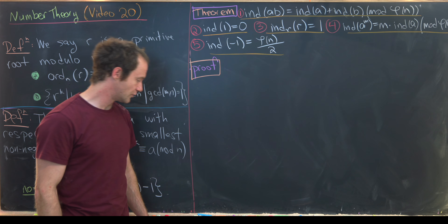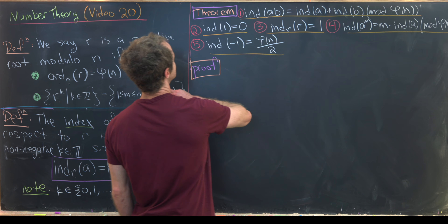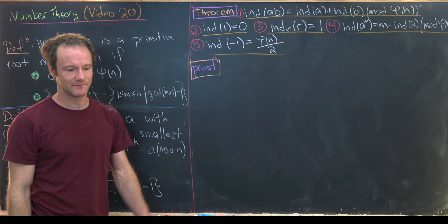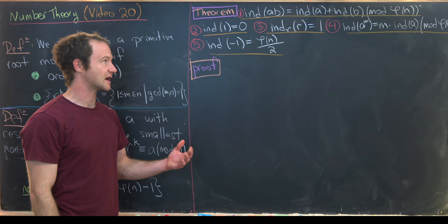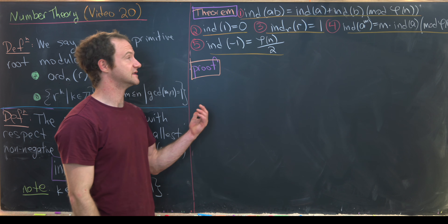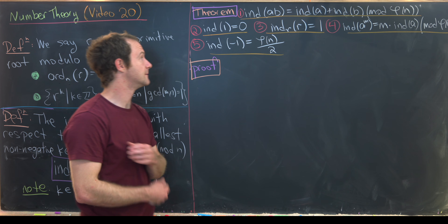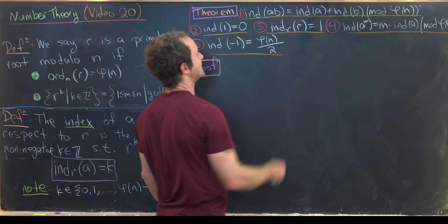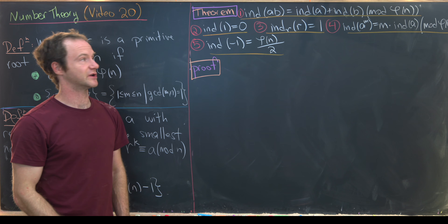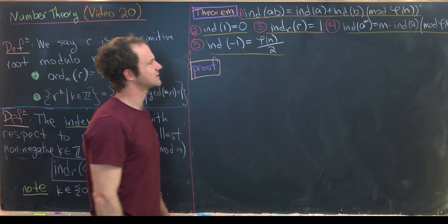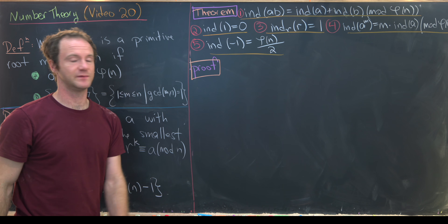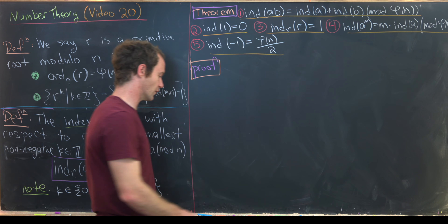The proofs go much the same way as for logarithms, so I won't prove all of them. The fact that ind_r(1) = 0 is obvious since r^0 = 1. That ind_r(r) = 1 is also obvious. We'll prove properties 1, 4, and 5, which require more work.